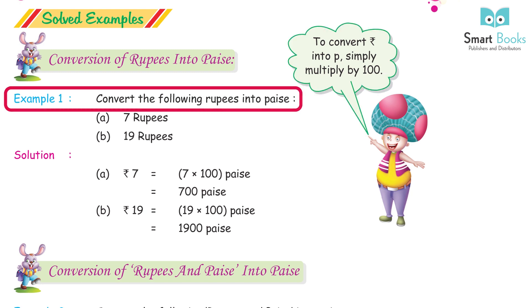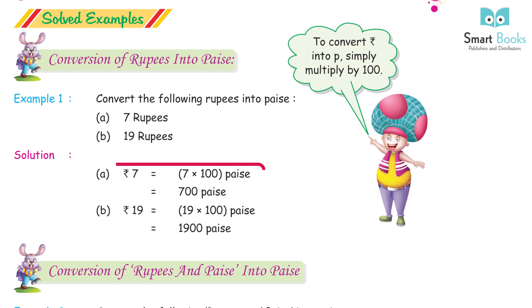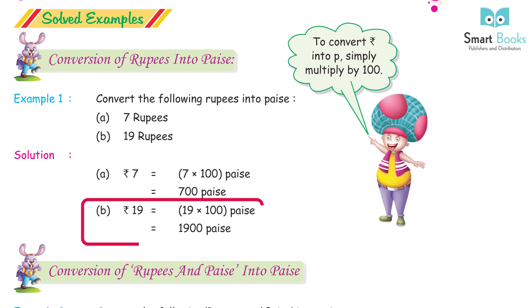Example 1: convert the following rupees into paise. a. 7 rupees = 7 × 100 = 700 paise. b. 19 rupees = 19 × 100 = 1900 paise.